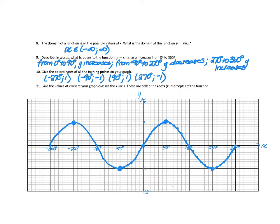Question 11: Give the values of x where your graph crosses the x-axis — these are called the roots or x-intercepts. Marking all roots, the answer is x = −360°, −180°, 0°, 180°, or 360°. If you're observant, you'll notice the graph crosses the x-axis every 180 degrees.